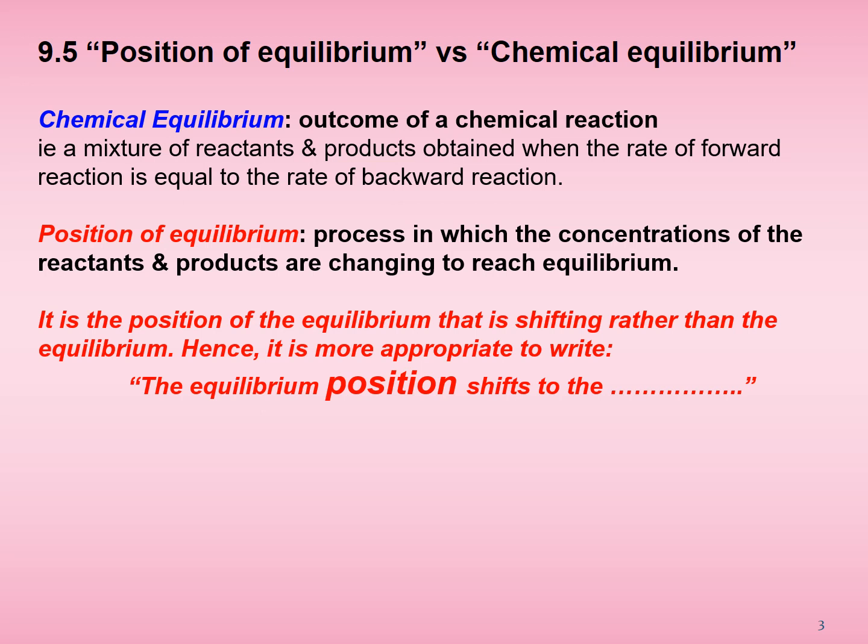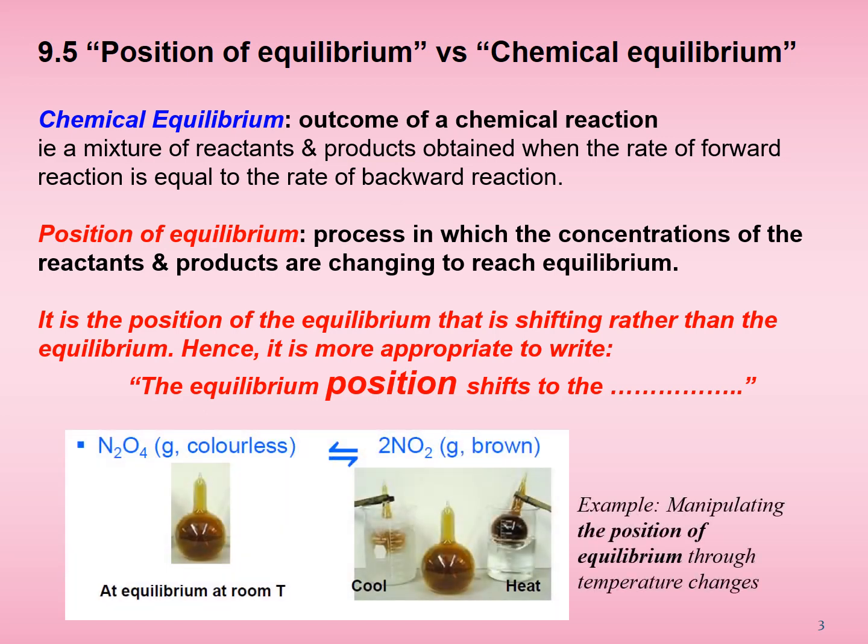We don't say that the chemical equilibrium shifts to the left or right. The diagram shows examples of the reaction mixture comprising colourless dinitrogen tetroxide (N₂O₄) and brown nitrogen dioxide (NO₂) shifting the position of equilibrium. By lowering the temperature, the dark brown reaction mixture becomes light brown, implying that some brown nitrogen dioxide has been converted into more colourless dinitrogen tetroxide. But by raising the temperature, the dark brown reaction mixture becomes a darker shade of brown, implying that some colourless dinitrogen tetroxide has been converted into more brown nitrogen dioxide.